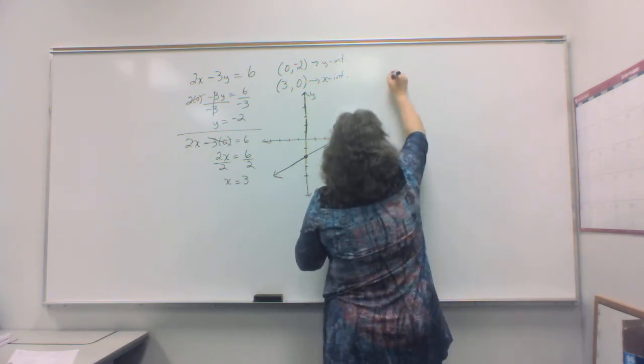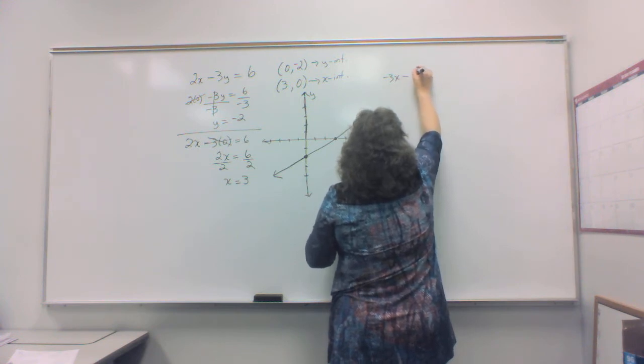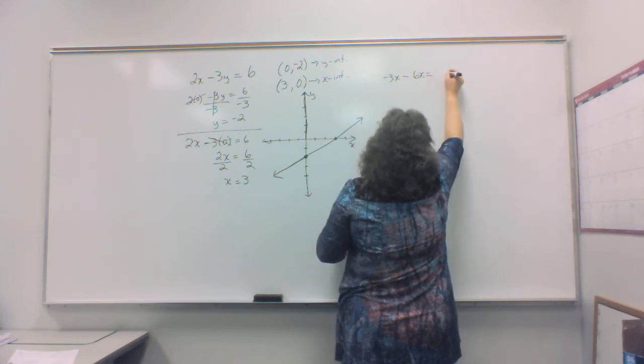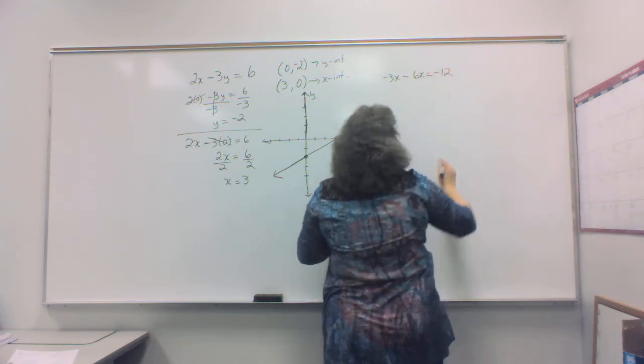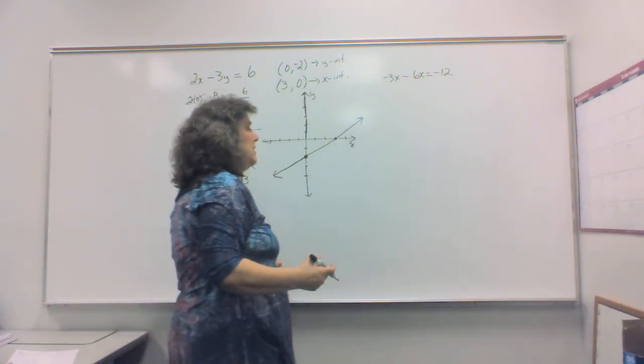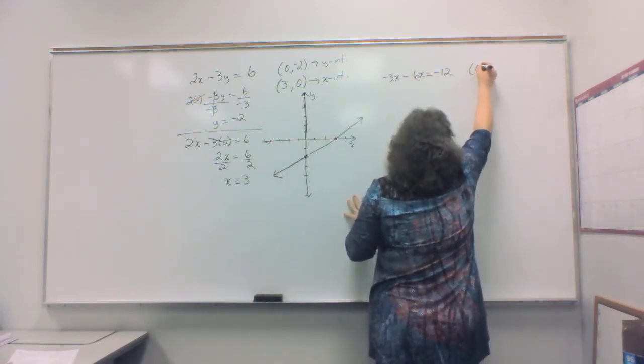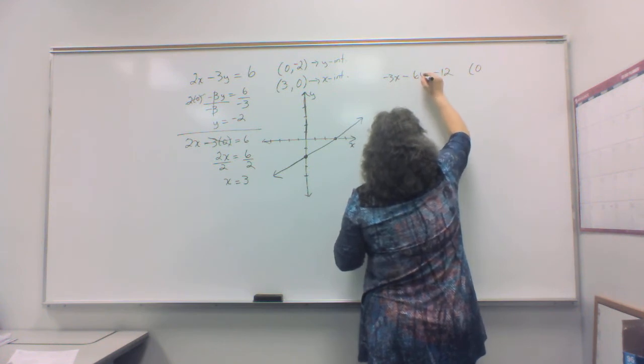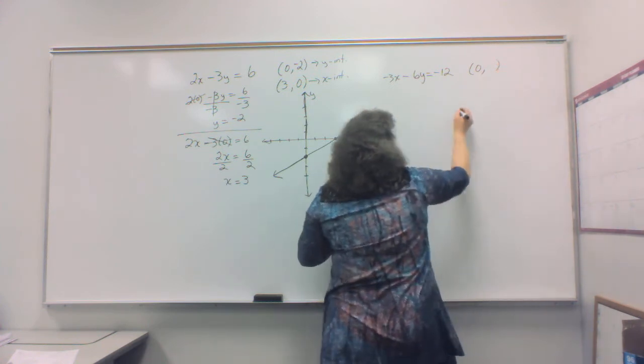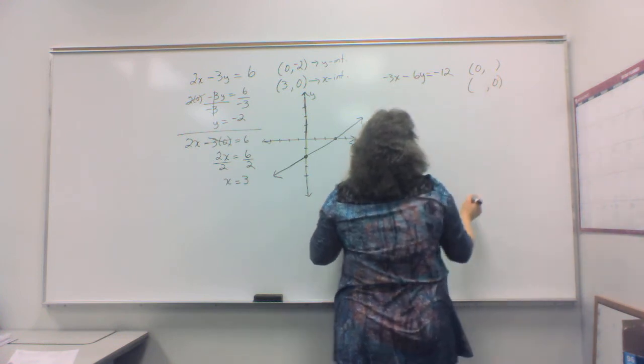Let's do one more. How about negative 3x minus 6y equals negative 12. Again, as you notice, I put a lot of negatives out there because I want you to see what happens. Again, we have two ordered pairs, a zero for my... See what I did? I put an x in where I should have put a y. A zero and then my y value and an x value and a zero for my y value.